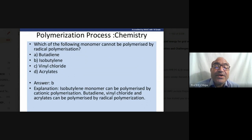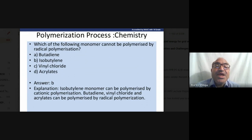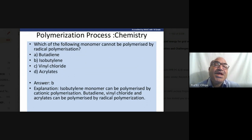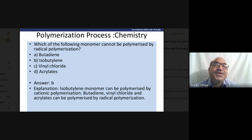The question is: which monomer cannot be polymerized by radical polymerization? There is free radical addition and electrophilic addition in the case of alkenes. For free radical addition, specific conditions are required — peroxides produce free radicals under those conditions.